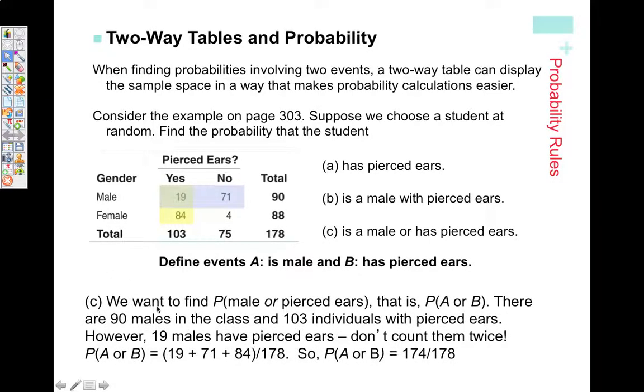For male or pierced ears, probability of A or B, we can't just take the number of yes and add the number of males. We can't use that addition rule because these two things are not mutually exclusive. They are not disjoint sets.